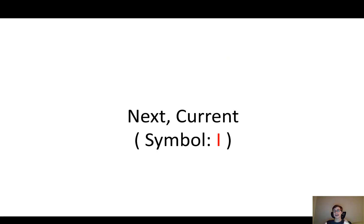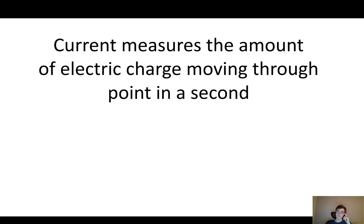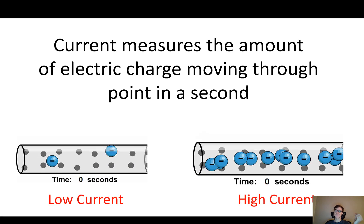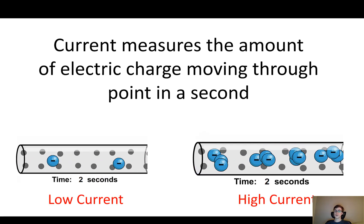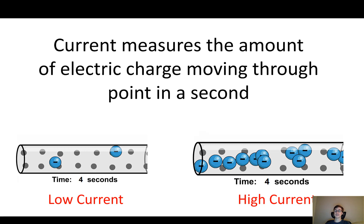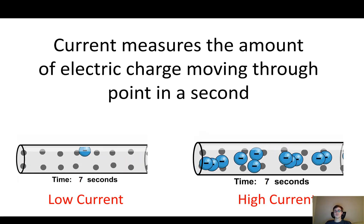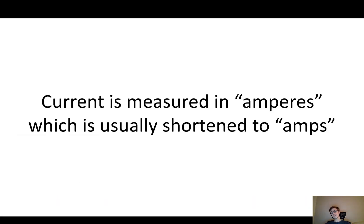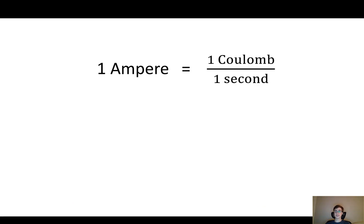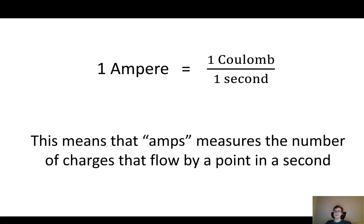Next, I'm going to talk about current, which in mathematical formulas has the symbol I. Current is a measurement of the amount of electric charge moving through a point in a second. Current measures how quickly the charges move through. It's technically measured in a unit called amperes, shortened to amps, and one ampere is one Coulomb of charge moving by every single second. So amps measures the number of charges that flow by a point in a second.